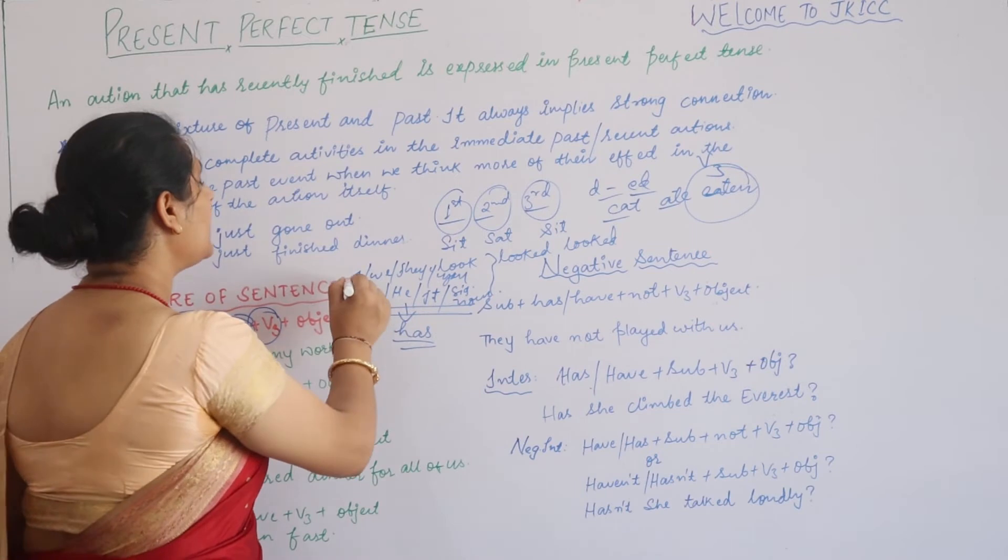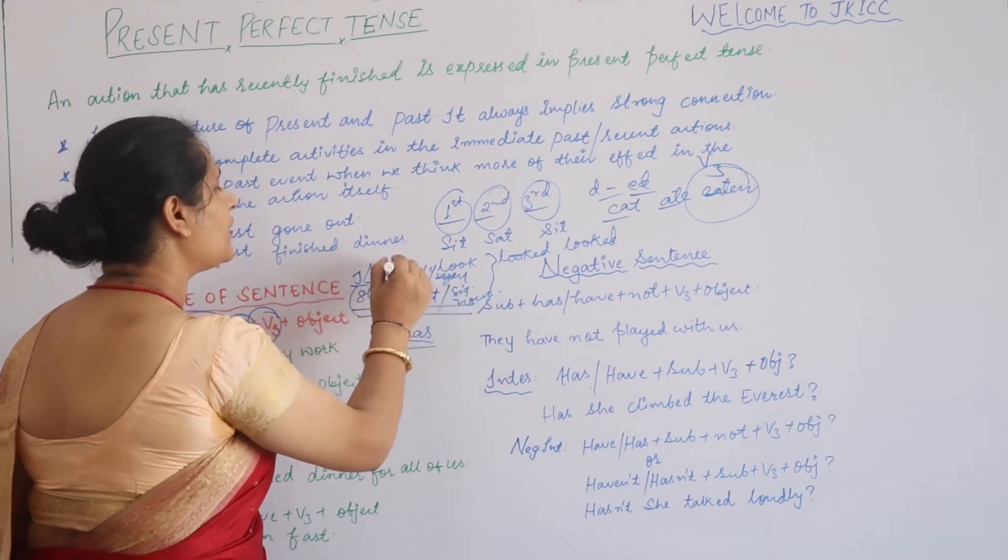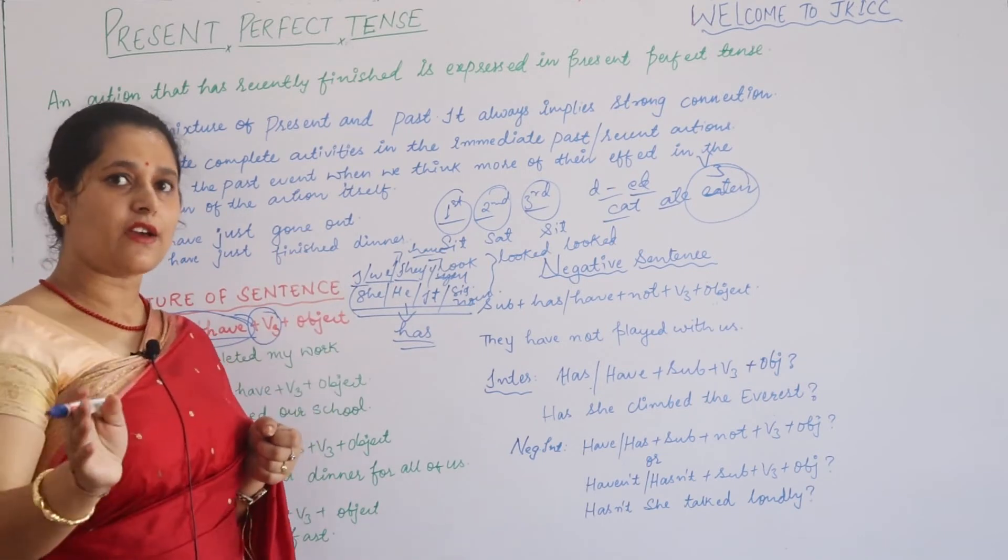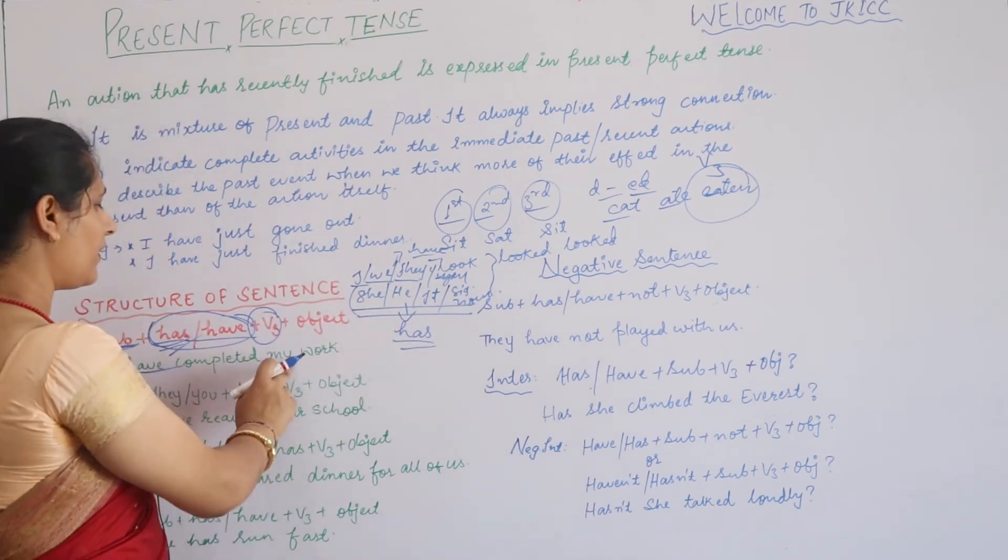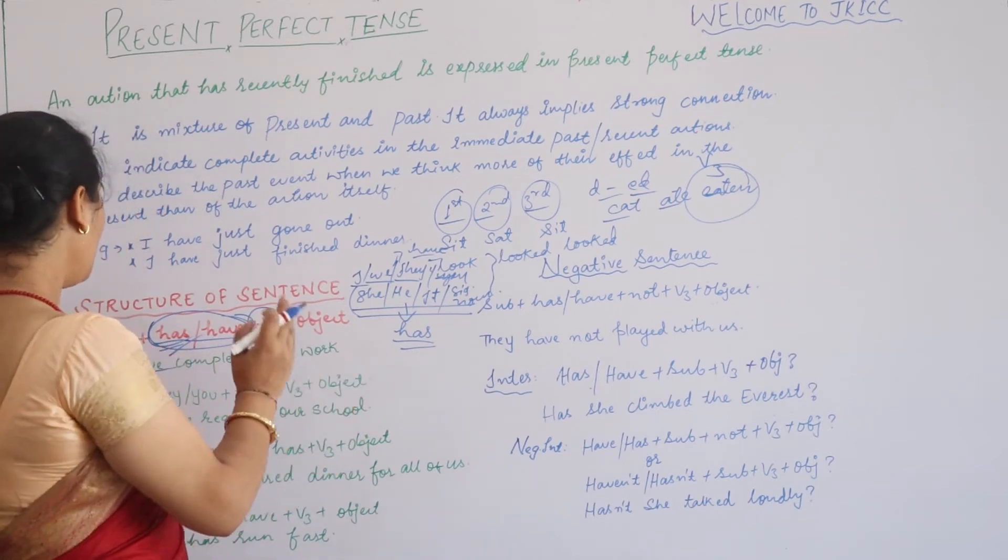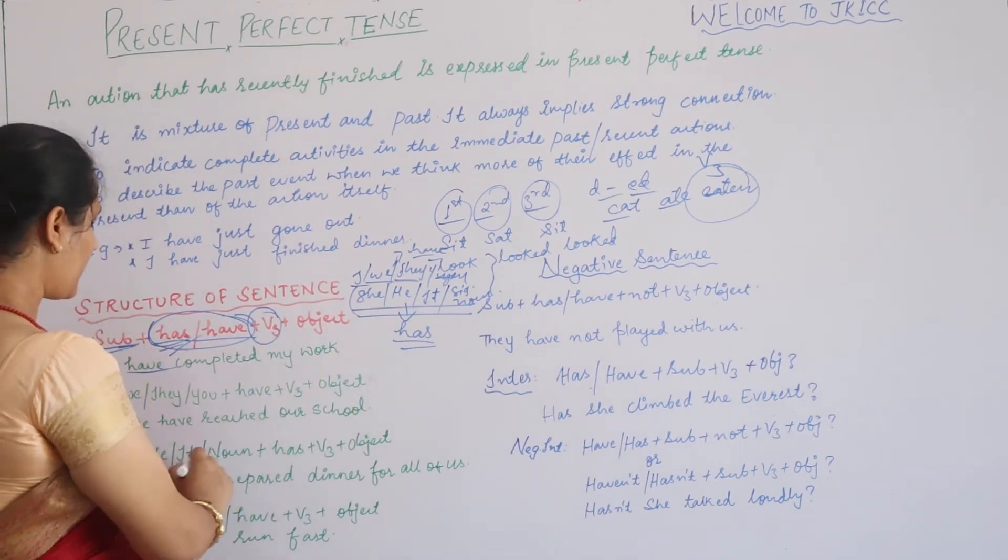And where you have subject I, we, they, and you, immediately you have to put have there. In perfect tense, we have has/have, and then third form of verb and object. This is the structure of sentence in present perfect tense.